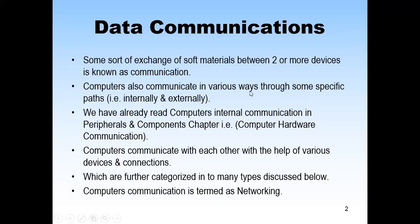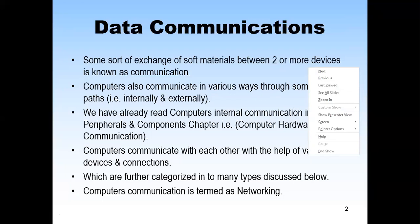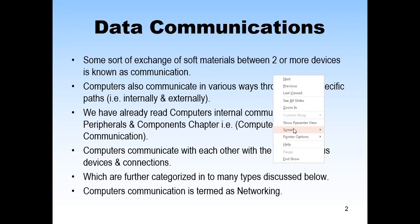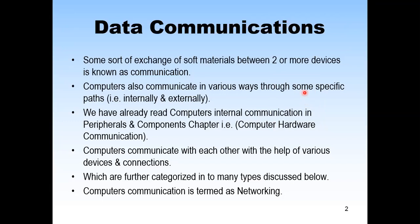Computers communicate in various ways through specific paths — internally within the computer system and externally between computers. We have already discussed internal communication in computer hardware, covering how the microprocessor, input/output devices, storage devices and other components communicate. Today we focus on external data communication — how we transmit data from one source to another destination, between two nodes or two systems.